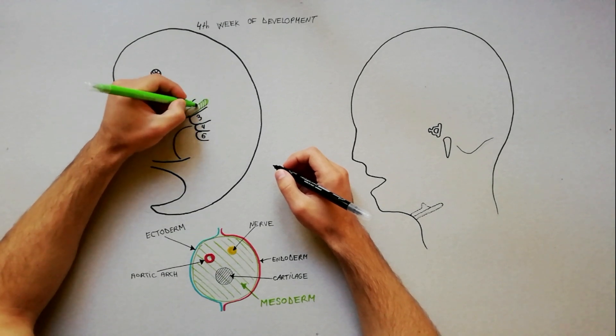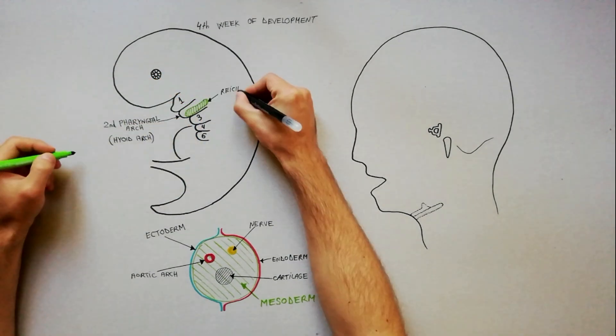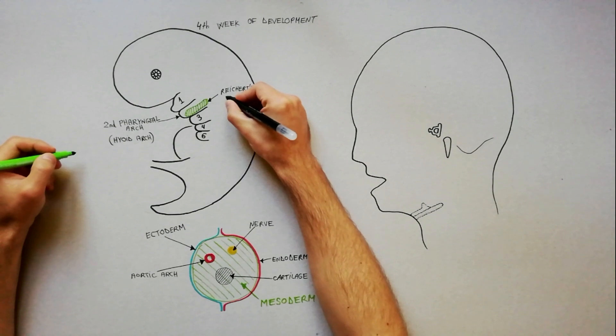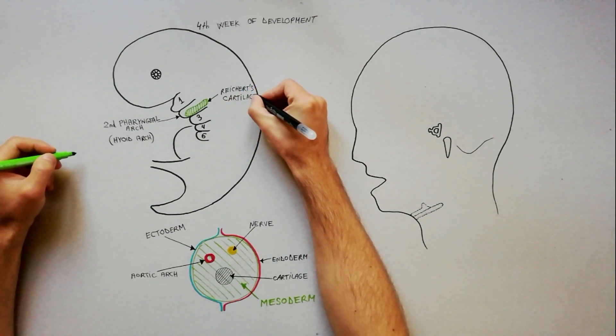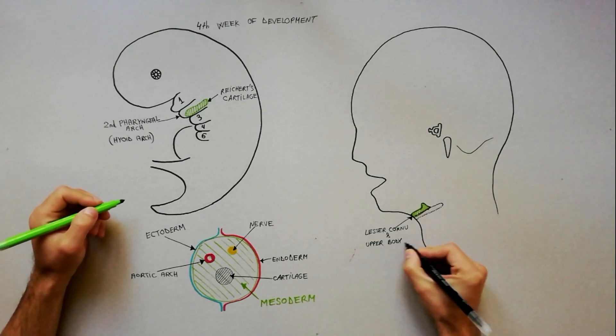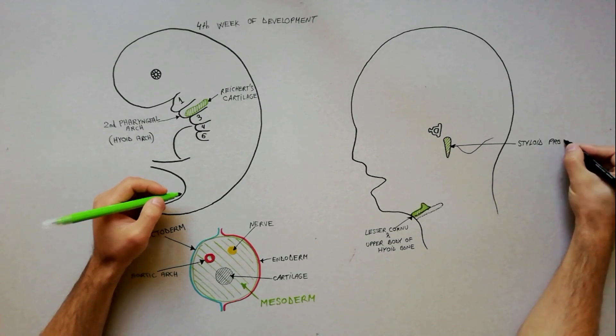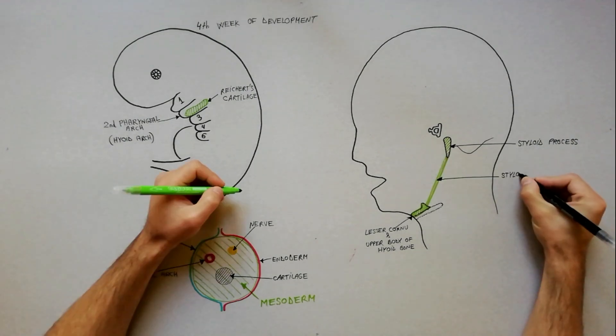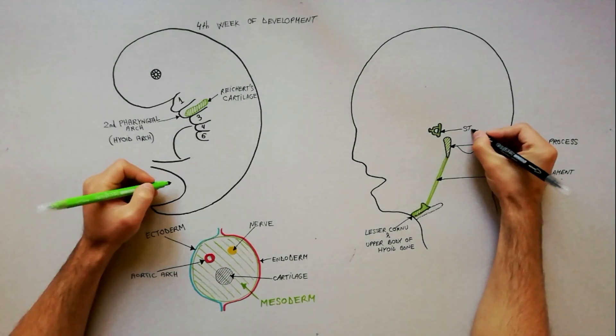In the structure of the second pharyngeal arch is Reichert's cartilage. This cartilage contributes to the formation of the following structures: lesser cornu and upper part of the body of the hyoid bone, the styloid process of the temporal bone, stylohyoid ligament, and the stapes.